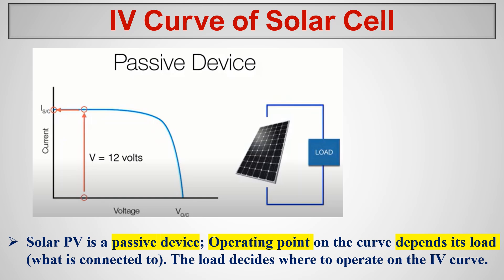Solar panels are a passive device. A passive device means the operating point on the curve depends on the load connected to it — the operating point is decided by how much load is connected. The load decides how much voltage is taken from the solar panels. This is why we call it a passive device.